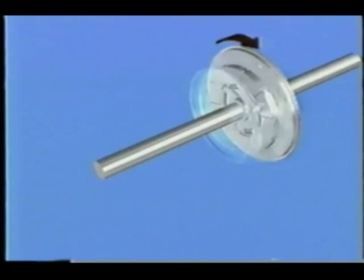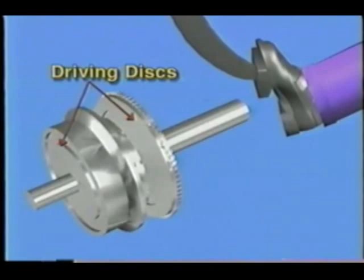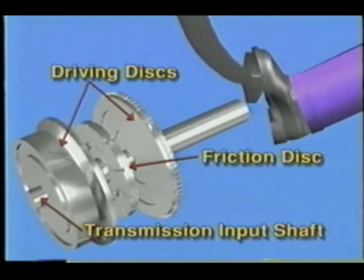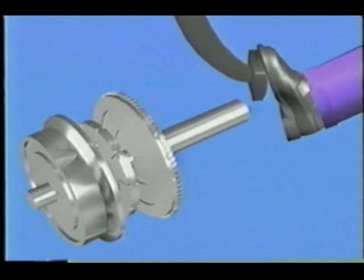The basic operation of a clutch is very simple. A friction disc is sandwiched between two driving discs. When the clutch pedal is pressed down, one driving disc is forced away from the other. This frees the friction disc, which is connected to the transmission input shaft. This allows the input shaft to stop rotating while the engine can continue to run.